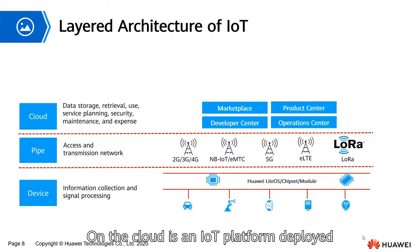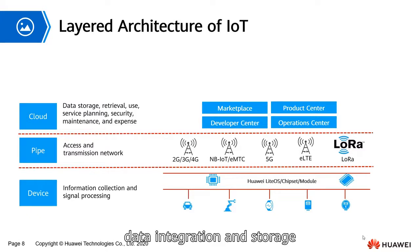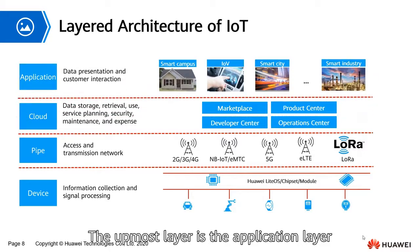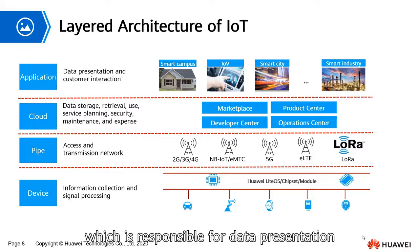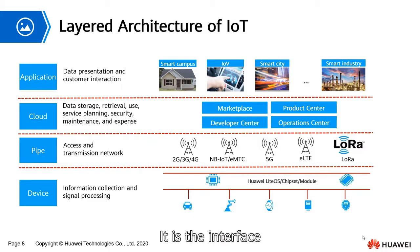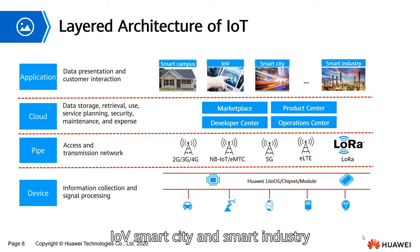On the cloud, an IoT platform is deployed, responsible for device access, device management, data integration and storage, and provides APIs for upper layer applications. The utmost layer is the application layer, which is responsible for data presentation, user interaction, and service logic processing — it is the interface for direct contact with end users. Applications from a variety of industries are supported, such as Smart Campus, IOV, Smart City, and Smart Industry.